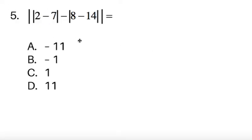Item 5, the absolute value of 2 minus 7 minus the absolute value of 8 minus 14. Now, the key takeaway is that everything is inside of this absolute value, and we know that this must be greater than or equal to 0 by properties of the absolute value function. So A and B, they are negative, so we can already cross them out.